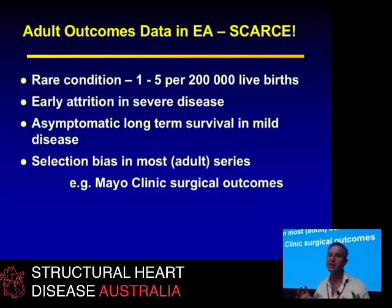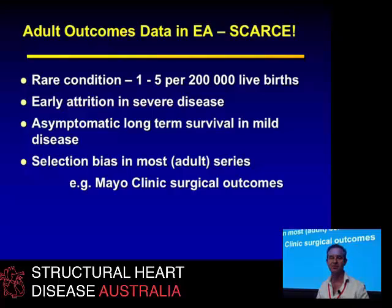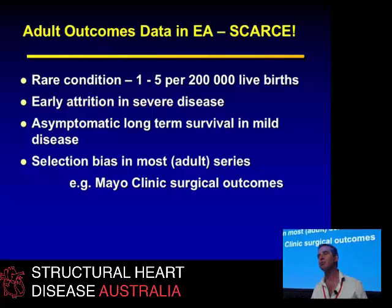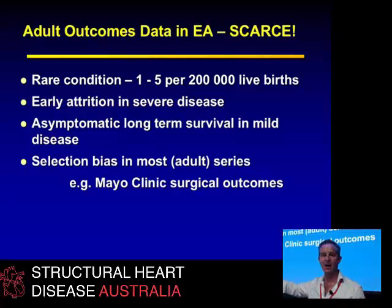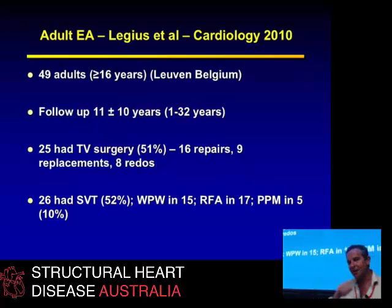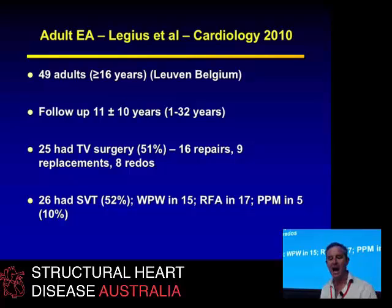There are only scarce data on adult outcomes in Epstein's anomaly because it's a rare condition, and because there's early attrition in severe diseases. But it is compatible with asymptomatic long-term survival in mild disease. The literature mostly comes from places like Great Ormond Street or the Mayo Clinic, where only the most severe cases are referred — so those data are skewed towards bad cases. The biggest series in the adult literature until very recently was 49 adults followed up for 11 years. Half had tricuspid valve surgery, and half had had SVT — a very morbid group.